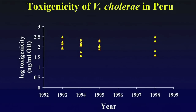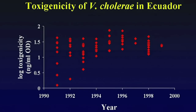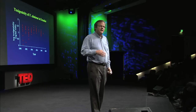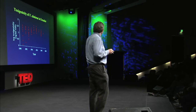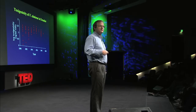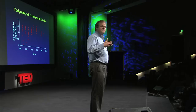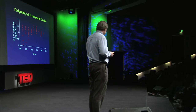Before we get too confident, we should look at other countries to make sure this organism doesn't just always evolve towards mildness. In Peru, it didn't. And in Ecuador — which has the highest potential for waterborne transmission — it looked like the pathogen got more harmful. In every case there was a lot of variation, but something about the environment, and I think the only realistic explanation is the degree of waterborne transmission, favored harmful strains in one place and mild strains in another.